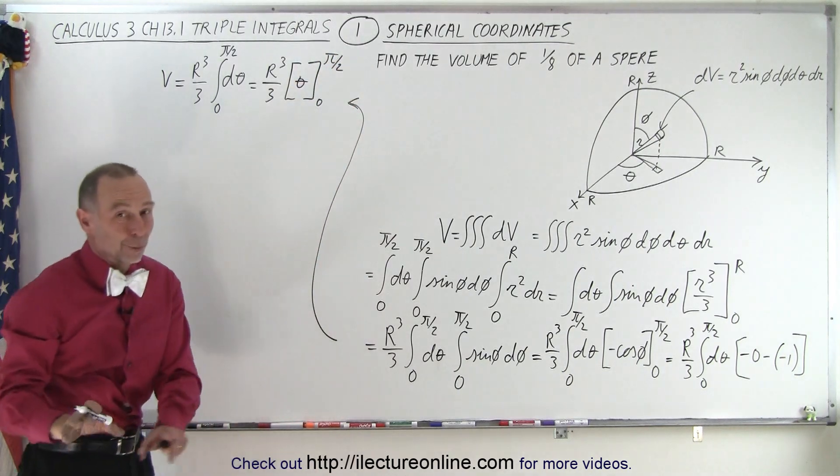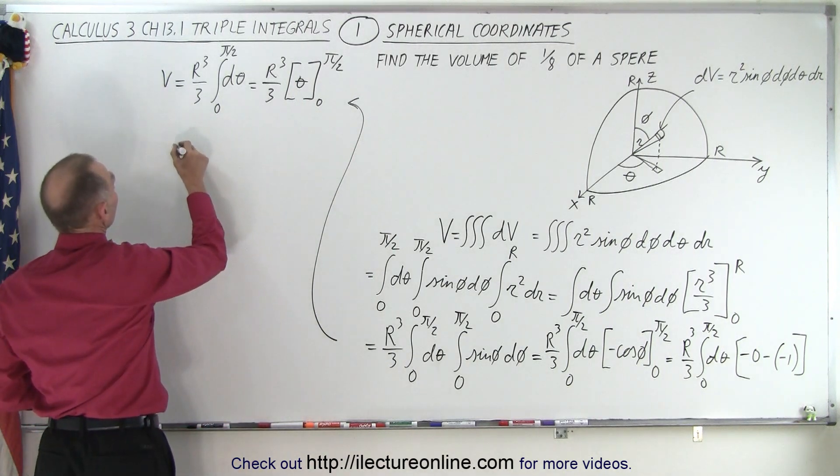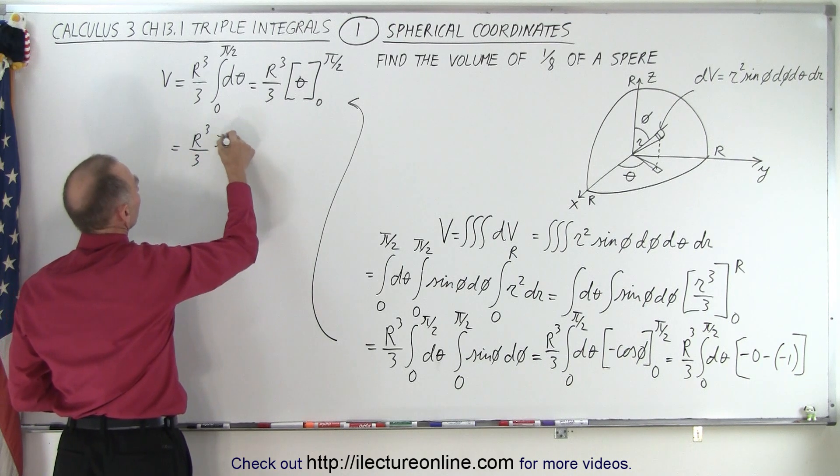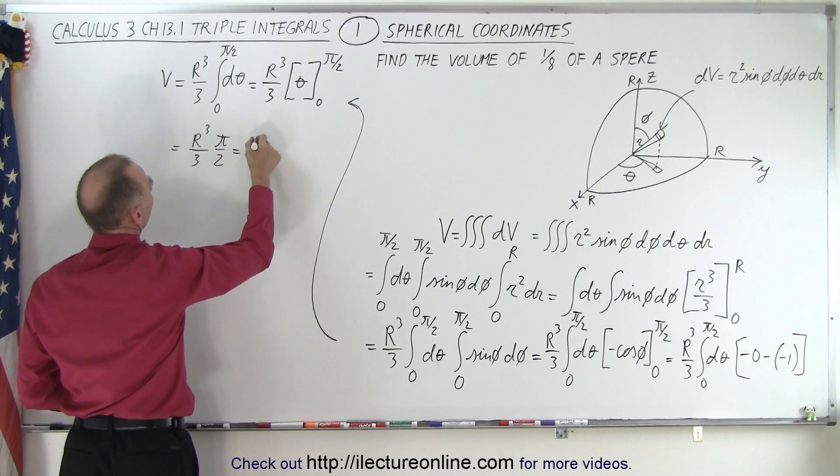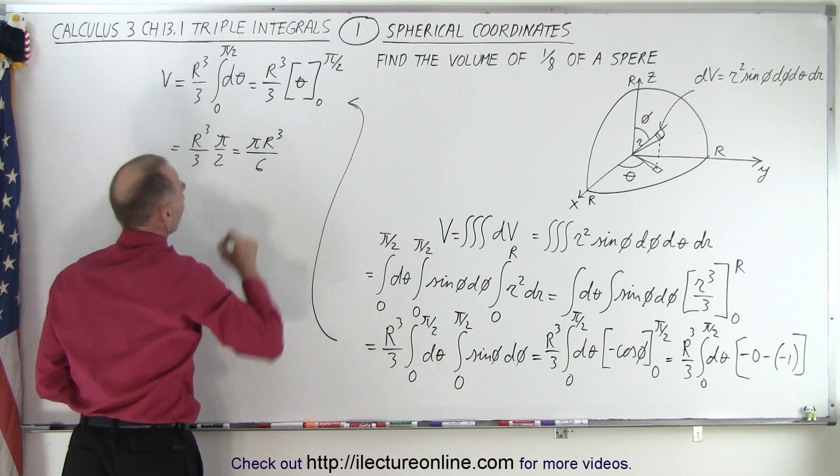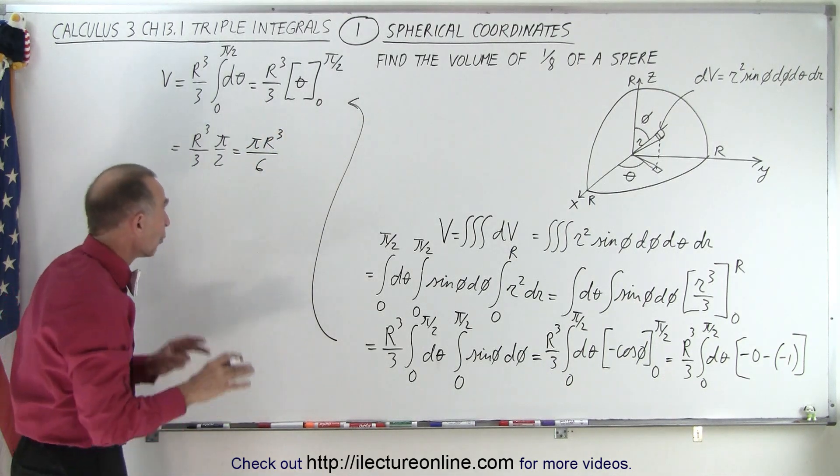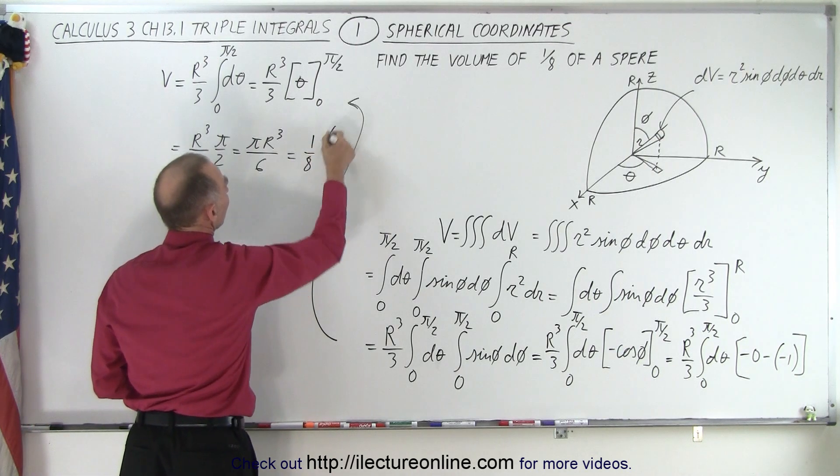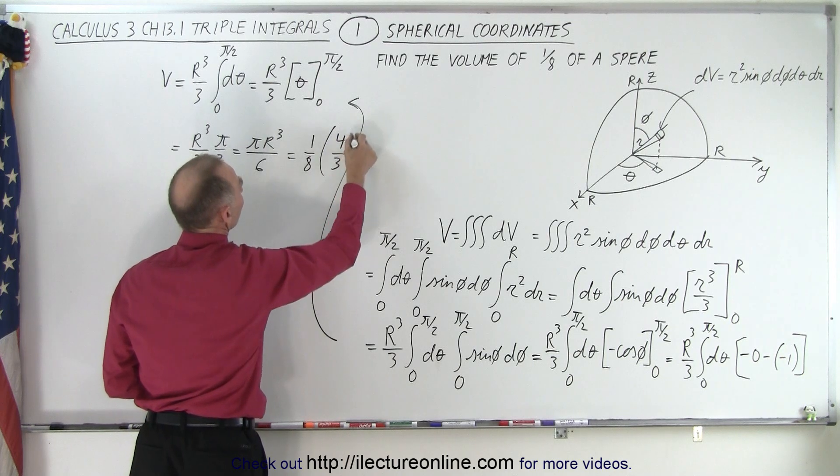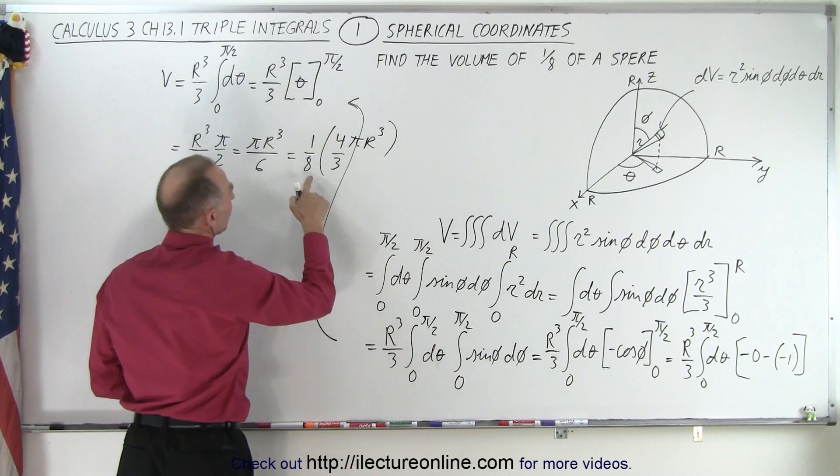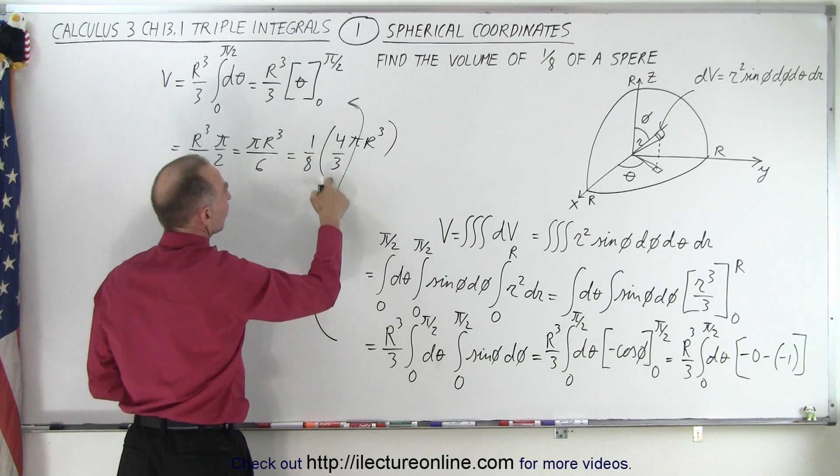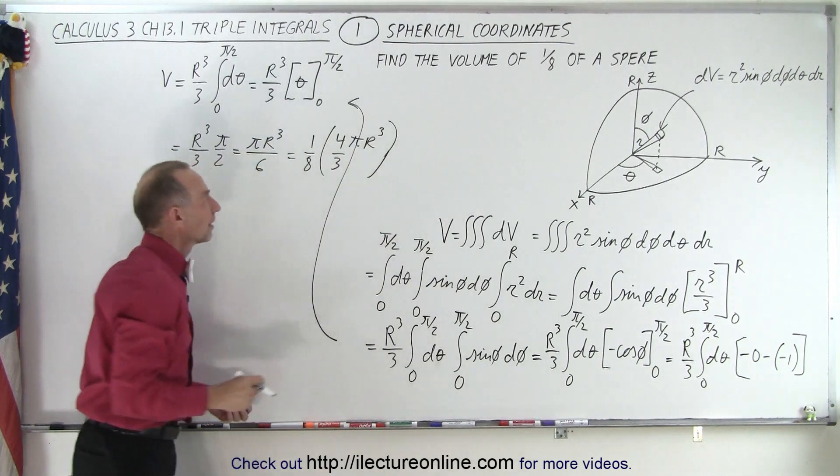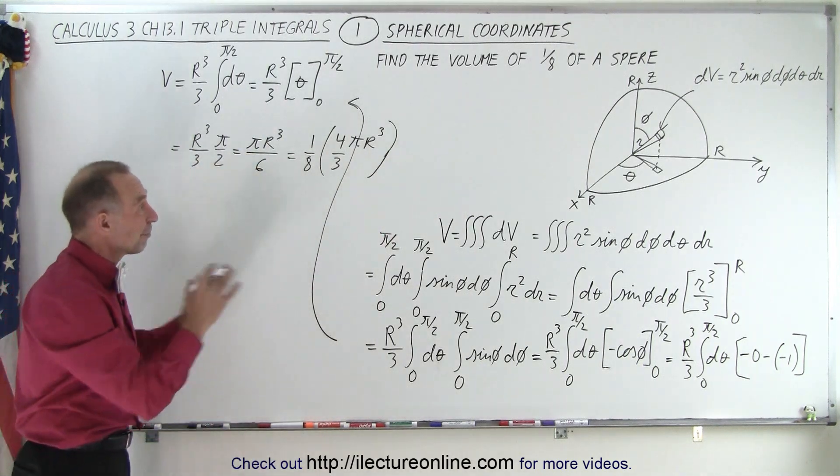And of course, when we plug in the lower limit, we get nothing, plug in the upper limit, you get this is equal to r cubed over 3 times pi over 2, which is equal to pi r cubed over 6. Now that happens to be exactly one-eighth of the volume of a whole sphere, so this is equal to one-eighth the volume of a sphere, which is 4/3 pi r cubed. Notice when we multiply this together, we get 1/6 pi r cubed, which is exactly one-eighth the volume of a sphere.